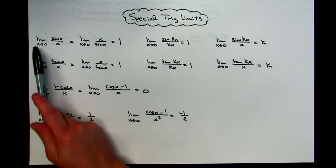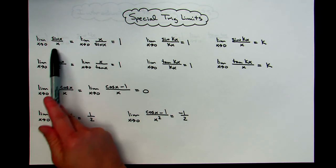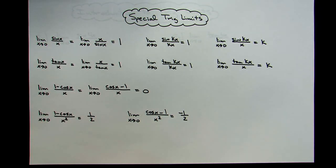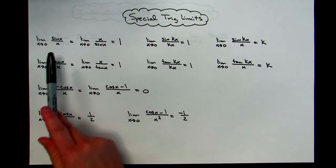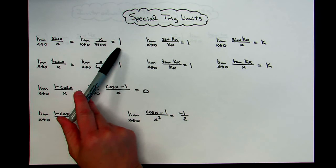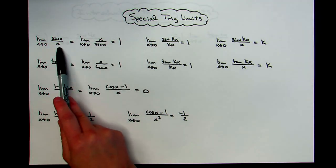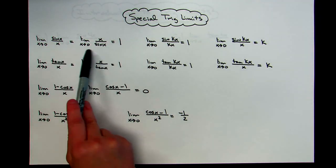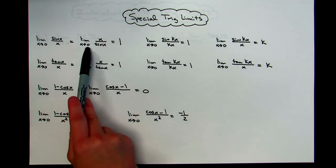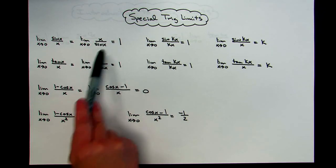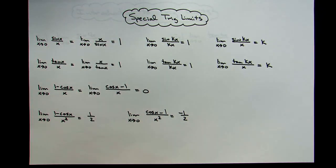Traditionally, the limit as x approaches 0 of sine x over x — that's in almost every textbook — is introduced as that limit being 1. I also like to include the fact that we can reverse that: the limit as x approaches 0 of x over sine x also equals 1.